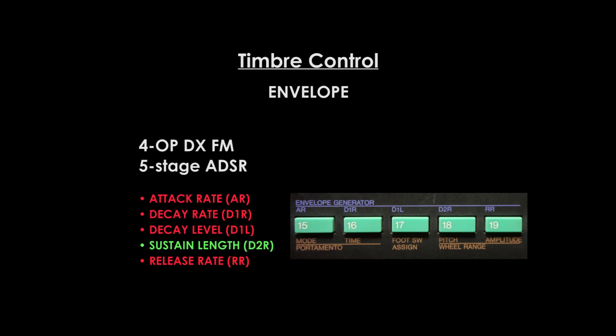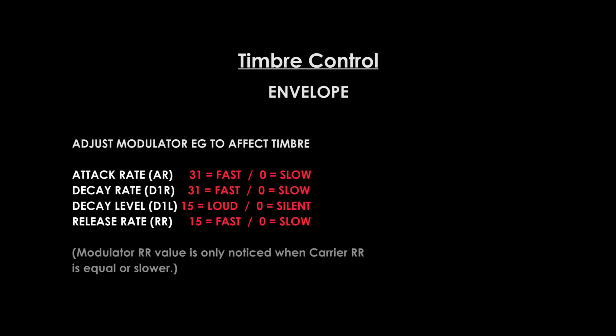You can also use the envelope to control the modulator's output level, and this will have the effect of changing the brightness over time according to key presses. 4-operator DX synthesizers have a basic 5-stage envelope: Attack Rate, Decay Rate, Decay Level, Sustain Length, and Release Rate. Adjust your modulator's Attack Rate and D1R values to adjust the envelope while the key is pressed. Have a look at these settings and listen to the corresponding examples. Try these out on your DX synth.